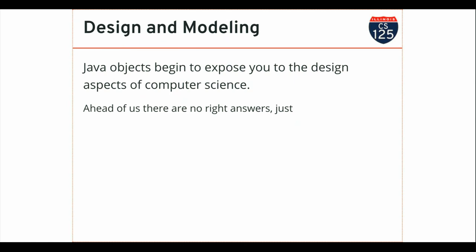Java objects begin to expose you to that part of computer science. We'll get a chance to create some things together, imagine how we want to represent stuff, and start to think more holistically about how we work with things in the world. One way to think about it: until now, you've had to content yourself with these eight primitive types that Java gave you out of the box. Now, you get to make the box — you can put anything you want in there. Objects allow you to design your own types and augment Java in any way you see fit.